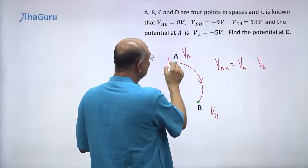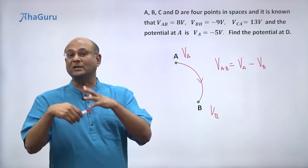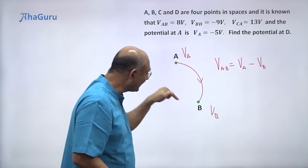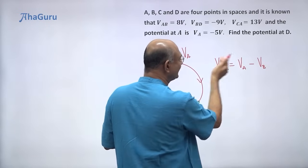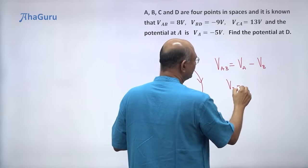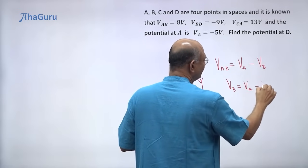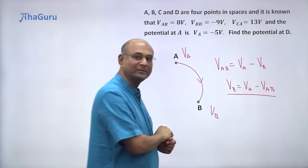But often what happens is you know this value and you know the potential drop. The potential drop is known and we want to find the potential of the other point. We can easily do that by taking this around here. We can write V_B is V_A minus V_AB. Just a simple algebraic manipulation.